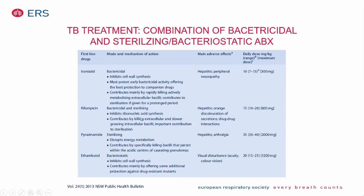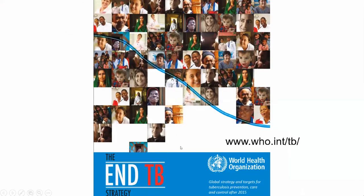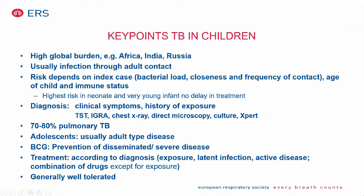There is an overview of the most commonly used anti-tuberculous drugs in children with dosages and side effects to monitor. Detailed literature and current worldwide guidelines are available on the WHO website. Key summary points: tuberculosis has a very high global burden, with the predominant areas being Africa, India, and for MDR-TB, Russia and neighboring countries. Children are usually infected through adult contacts, and the risk depends on the index case's bacterial load, closeness and frequency of contact, age of the child, and immune status.